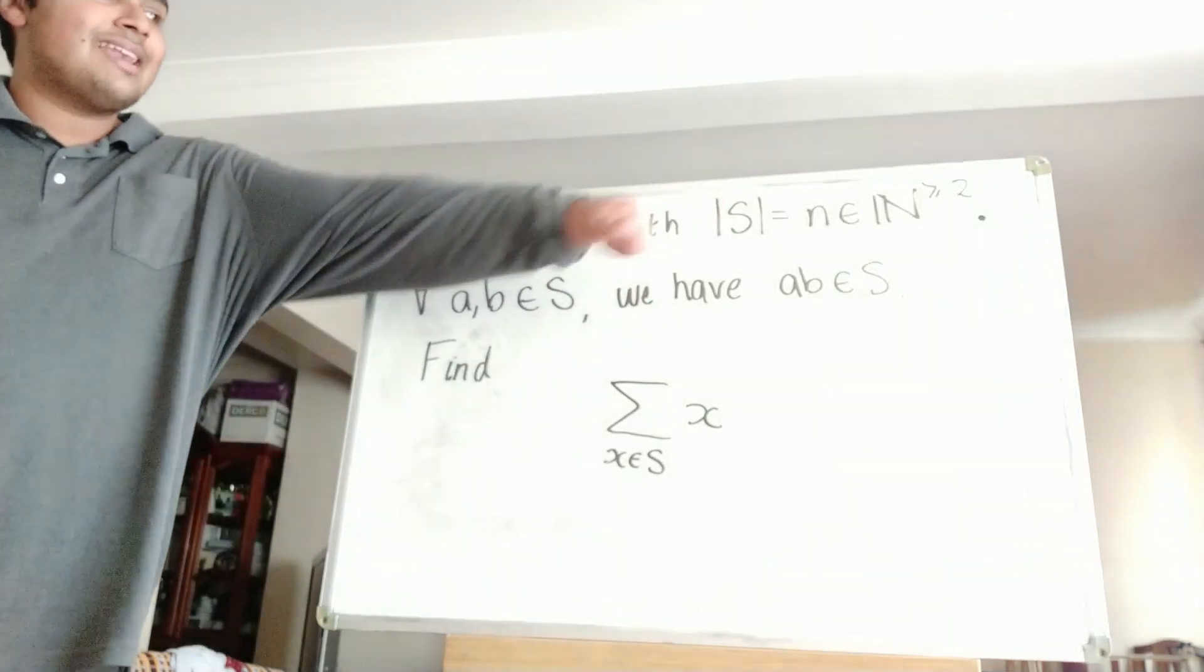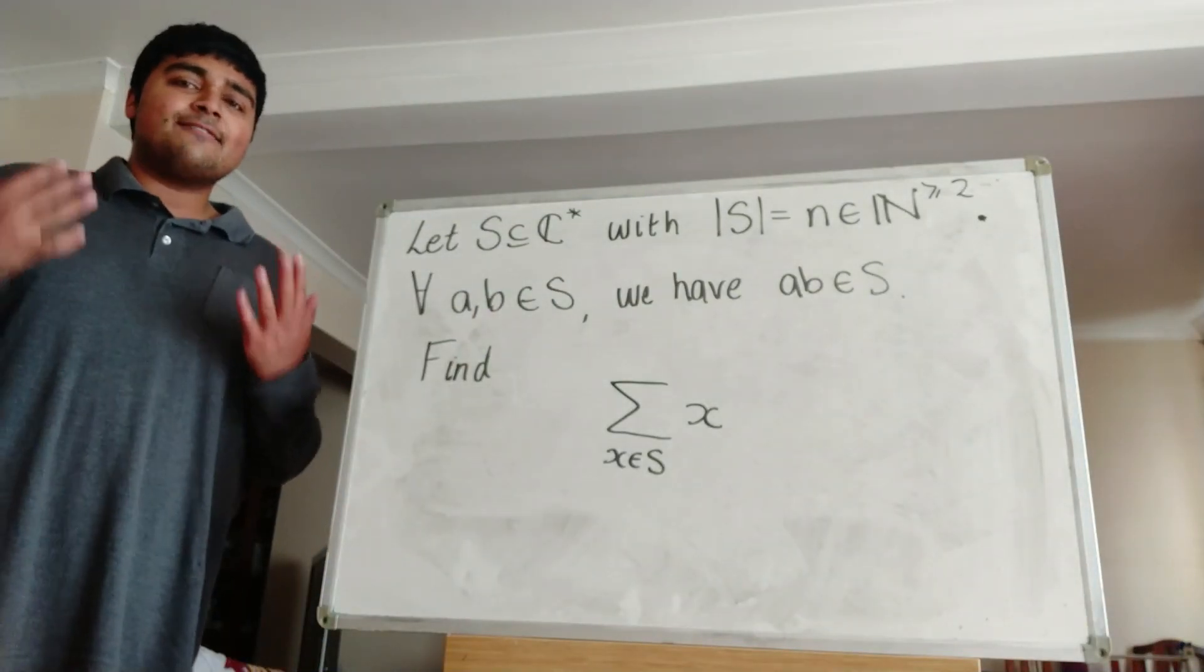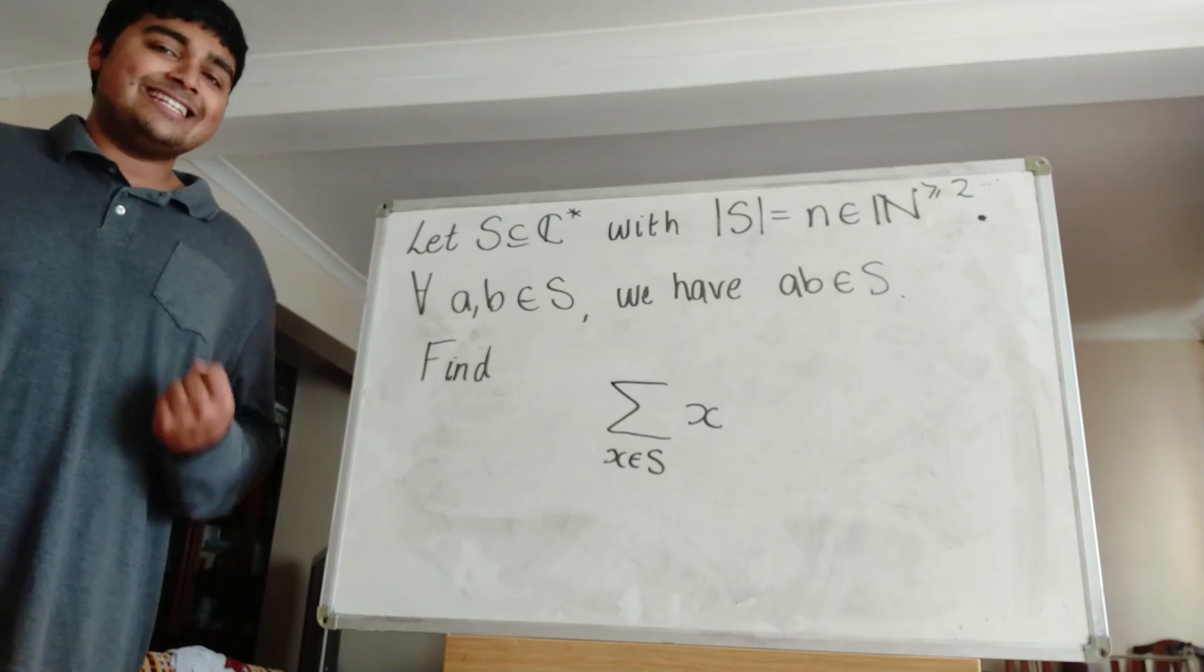And we have that the cardinality of S is just N, where N is a natural number which is at least 2. So S is a finite set with cardinality at least 2.